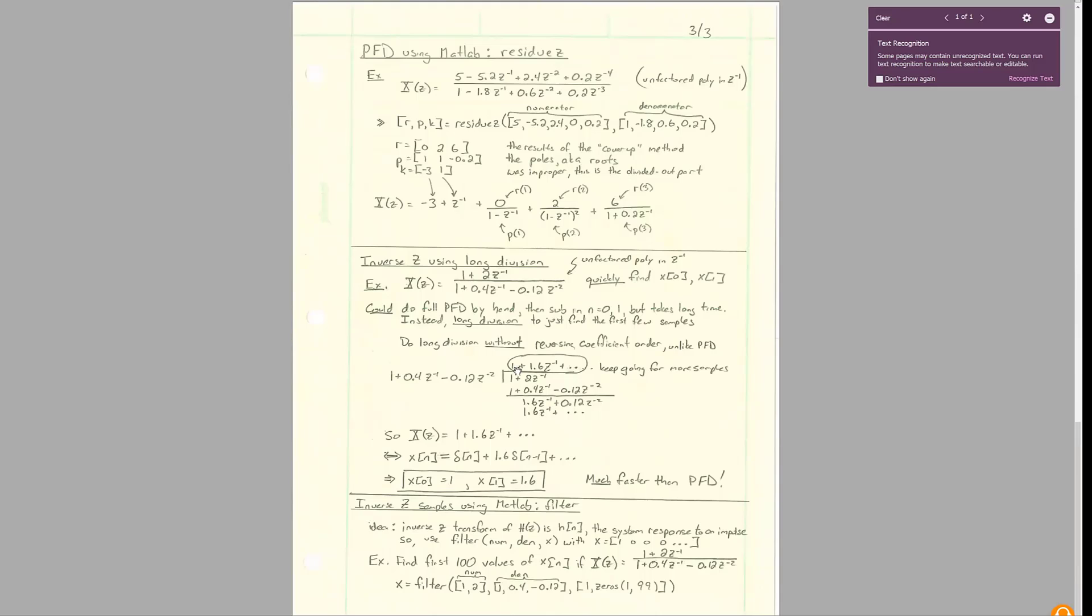And what you'll end up getting is one plus stuff. And if you continue to do the division, you'll continue to get an answer that's in groups of z to the negative two next, and the next will be a z to the negative three, next will be z to the negative four, and we'll continue on.